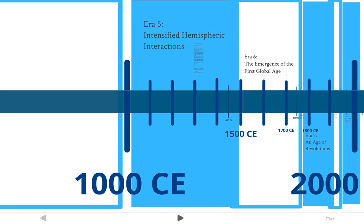In Era 5, from about 1000 to 1500 CE, we'll be looking at intensified hemispheric interactions, which really means how different parts of the world — different sides of the world — begin to interact with each other.